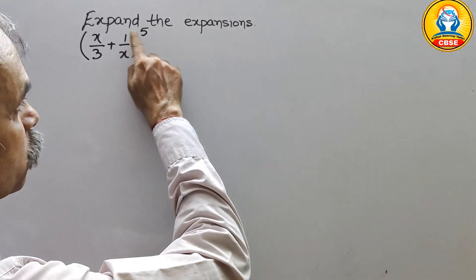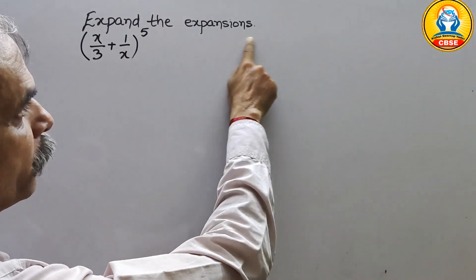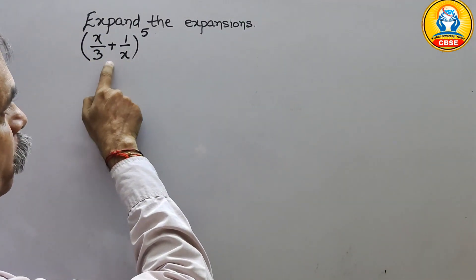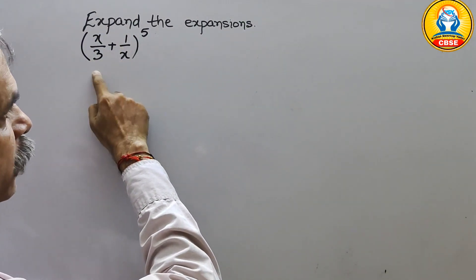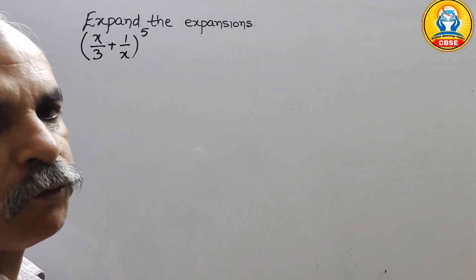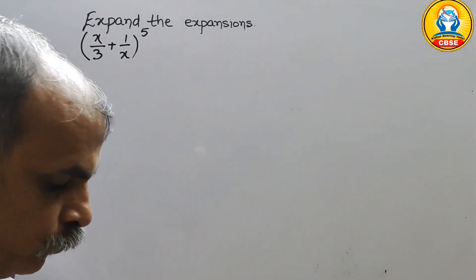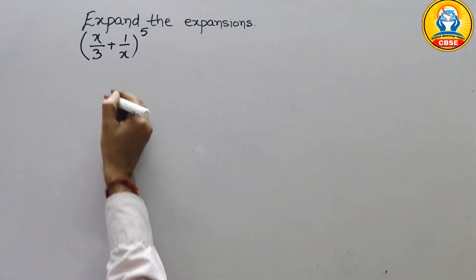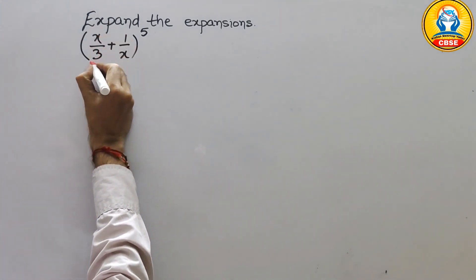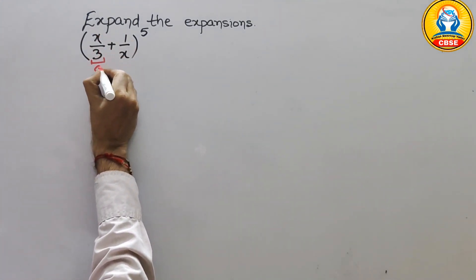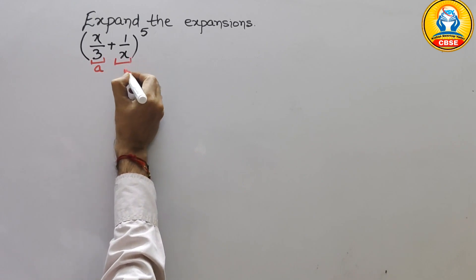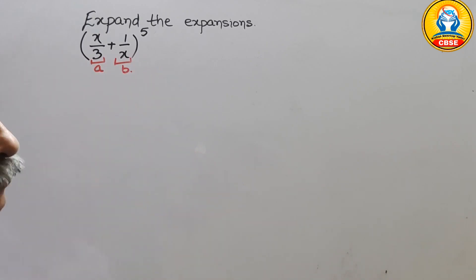The question is to expand (x/3 + 1/x) to the power of 5. First we will write the formula. Here we will take x/3 as 'a' and 1/x as 'b'.